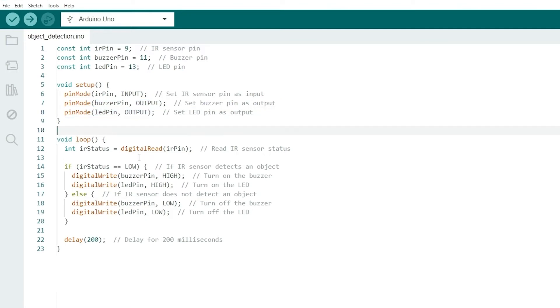In the loop function, read the IR sensor's output and check if an object is detected. Now we have to upload the code to our Arduino.